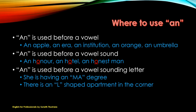'An honest man' — you know this because H is silent. Then 'an' is also used before a vowel-sounding letter. For example, 'She is having an MA degree' — not 'a MA degree,' because when you say M it sounds like 'em,' which is a vowel sound. Also: 'There is an L-shaped apartment in the corner' — even though L is a consonant, its sound is 'el,' which is a vowel sound.